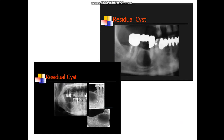Residual Cysts are a type of Periapical or Radicular Cyst that persists in the jaw bone after removal or extraction of the tooth. So it is called a Residual Cyst and can usually be seen in the edentulous area. Treatment depends on the size — whether enucleation or marsupialization.